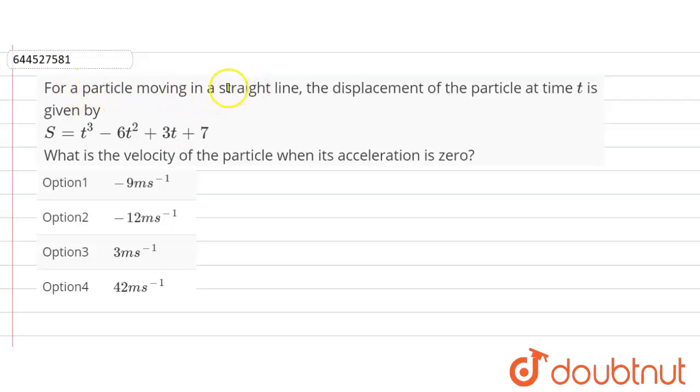For a particle moving in a straight line, the displacement of particle at time t is given by S equals t cube minus 6t square plus 3t plus 7. What is the velocity of the particle when its acceleration is zero?